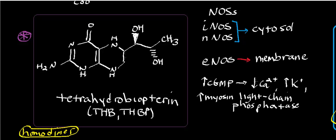When you get this increased cyclic GMP, it causes closure of calcium channels, so calcium can no longer influx to the inside of the cell. It also activates potassium channels, which causes potassium to efflux from inside the cell to outside. Overall, that causes hyperpolarization of cells, making them more inactive.